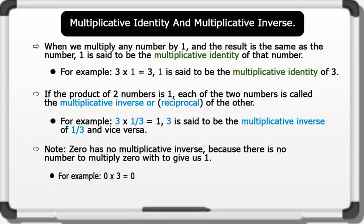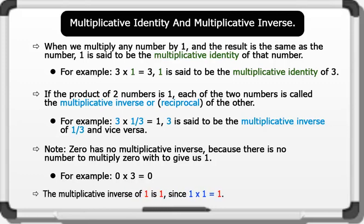For example, 0 times 3 equals 0. Note: the multiplicative inverse of 1 is 1, since 1 times 1 equals 1.